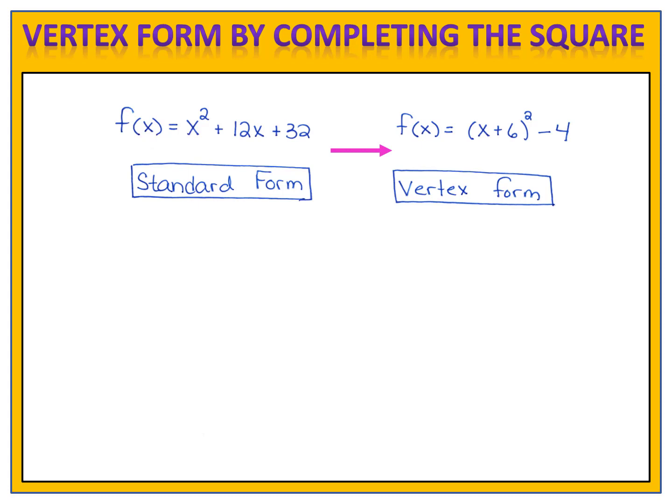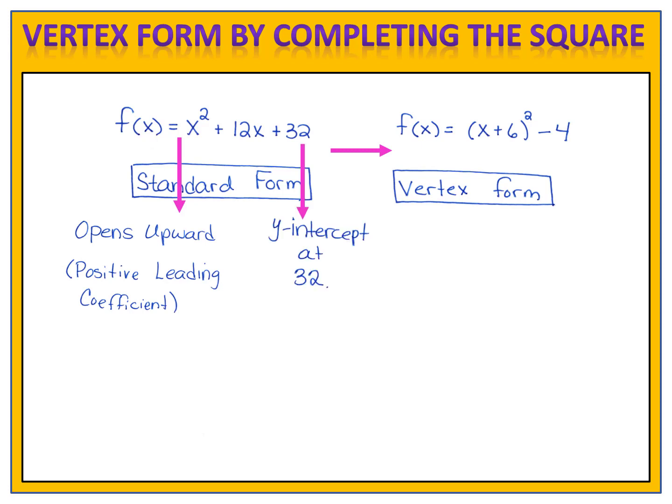Each of the forms has its benefits. Standard form, for example, we can tell that the quadratic function opens upward because we have a positive leading coefficient, and we can see that the y-intercept in this function is at 32, or at the point 0, 32. That's where the graph would cross through the y-axis.